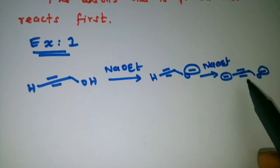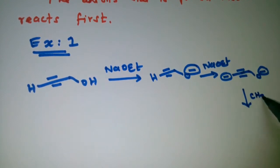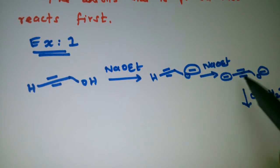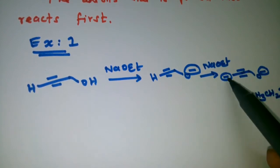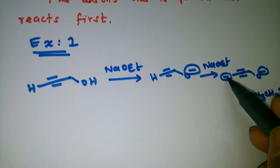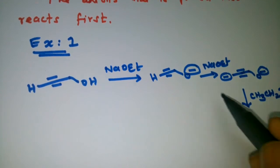Next, this di-anion reacts with ethyl iodide. Which ion reacts first? The second anion — the one formed last — reacts first. So this ion attacks the carbon of ethyl iodide, and iodine leaves.